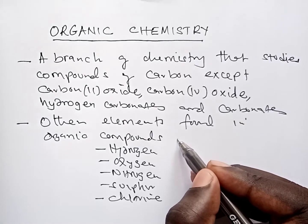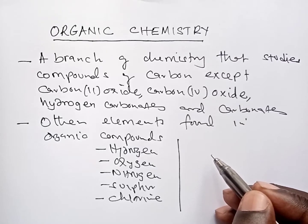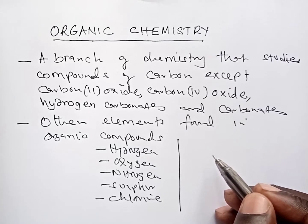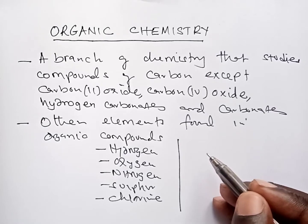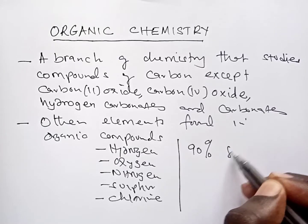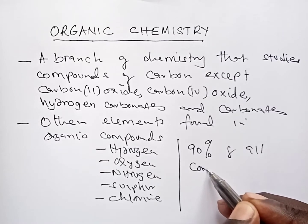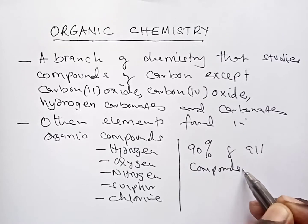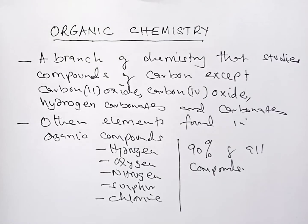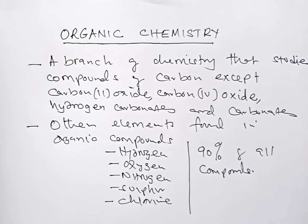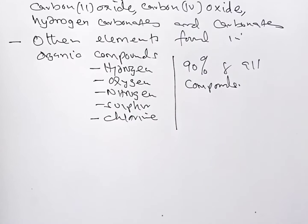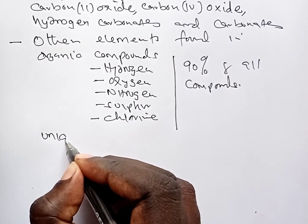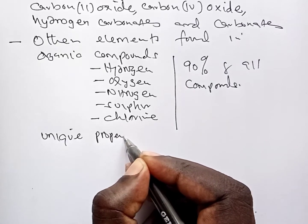Organic compounds are so many. In fact, 90% of all compounds on earth are organic. So the next question we are asking ourselves is: why is carbon able to form so many compounds? Let us look at the unique properties of carbon and why it forms so many compounds.